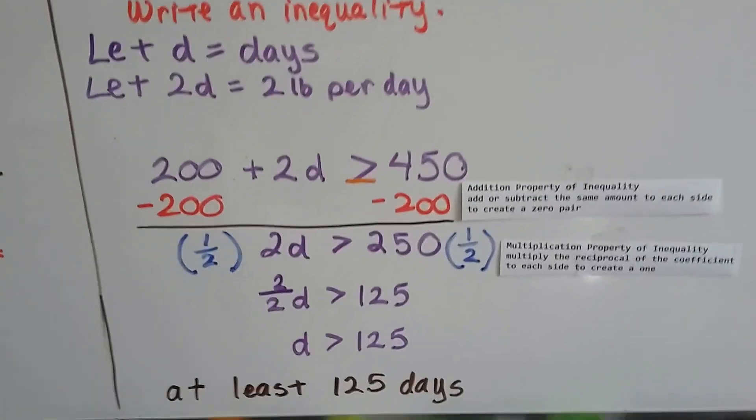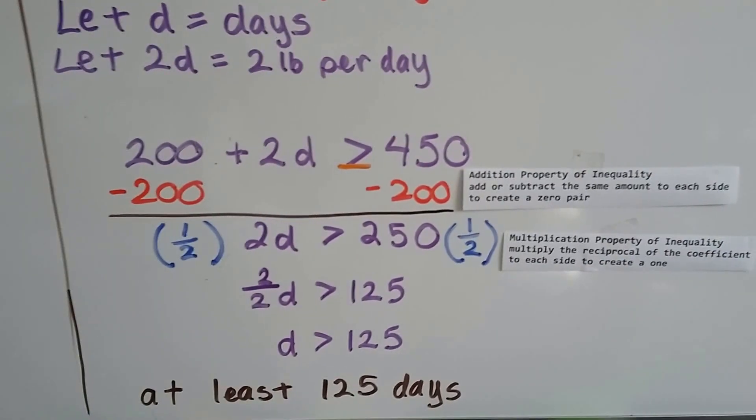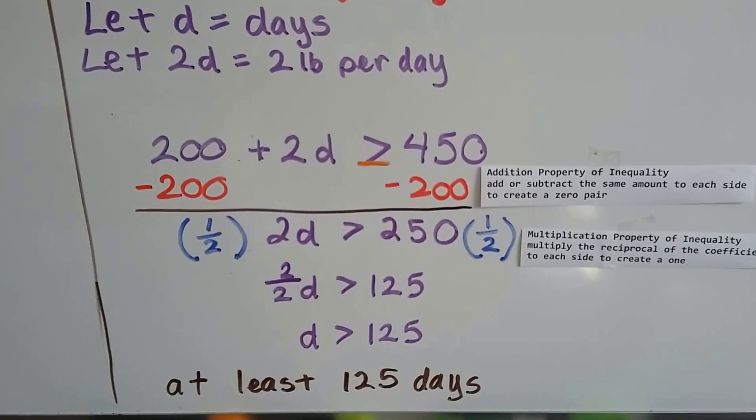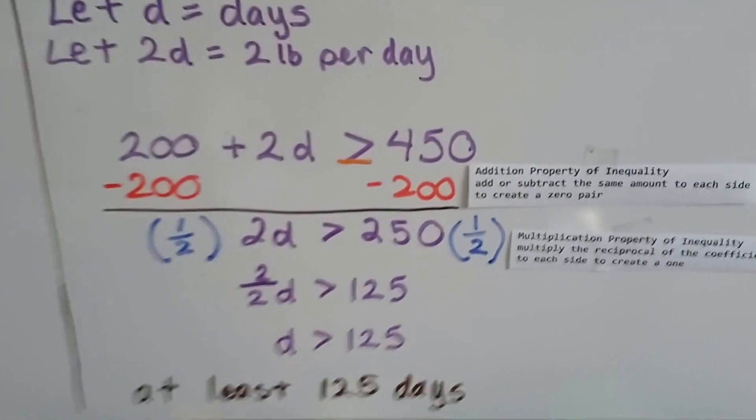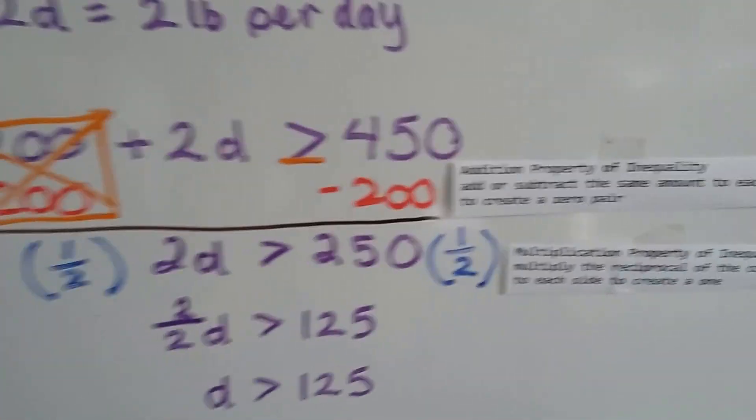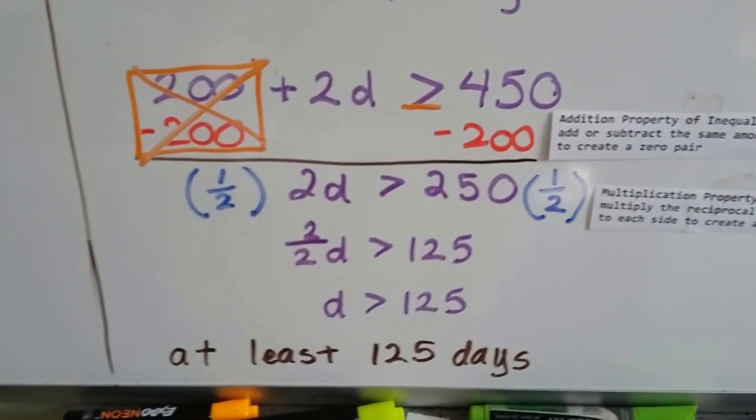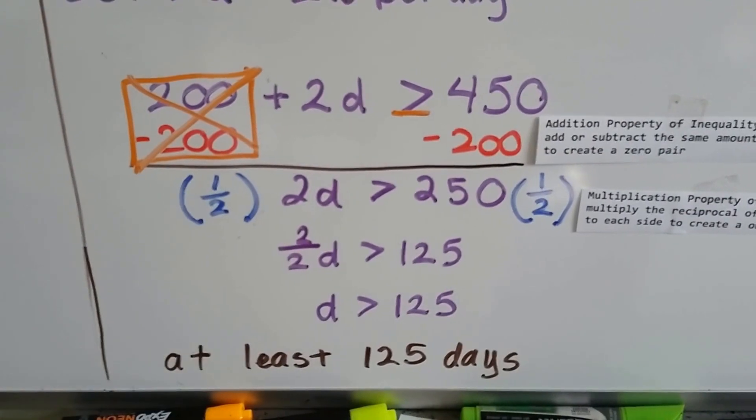So now we're going to use the addition property of inequality to add or subtract the same amount from each side to create a zero pair. We're going to get rid of this 200 and create a zero pair by subtracting 200 from each side. Now we've got 450 minus 200 is 250, and on this side our 2d drops down.